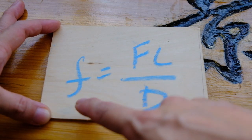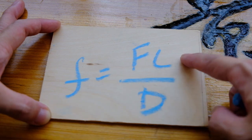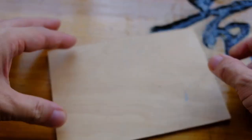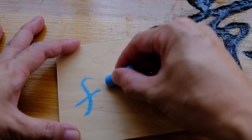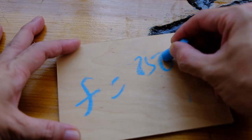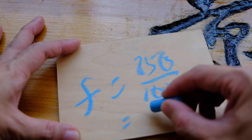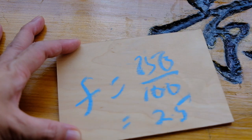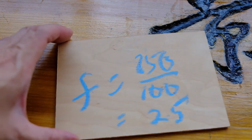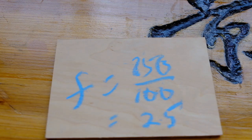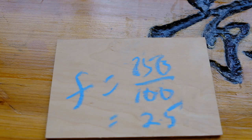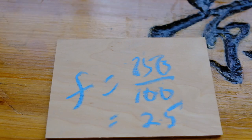So the aperture, the f-stop, will be focal length divided by the diameter of the lens. So that will give us f equal to 250 divided by 100, so it's about 2.5. The aperture of the magnifying glass lens is about f/2.5, so we'll use it as a starting point when calculating our exposure.